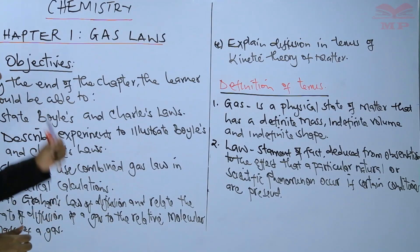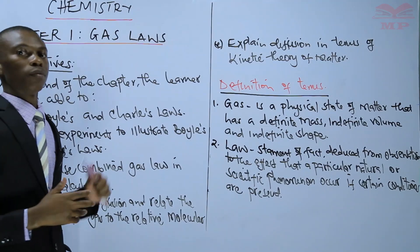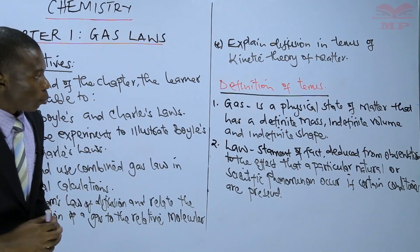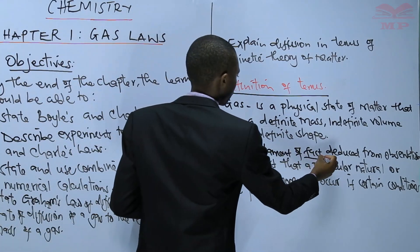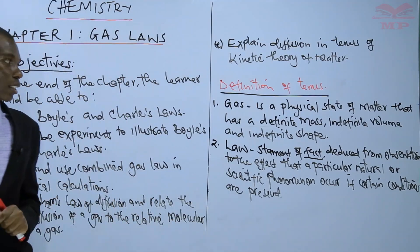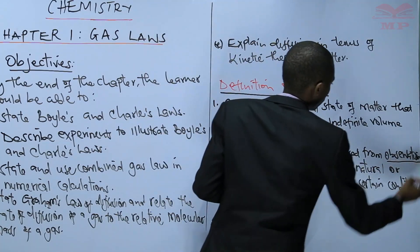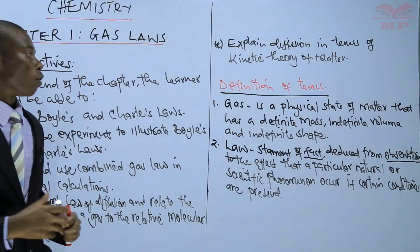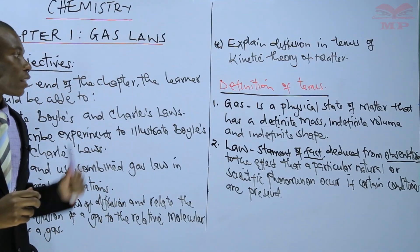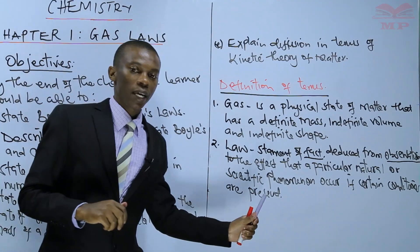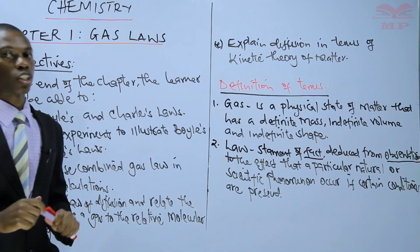To the effect that a particular natural or scientific phenomenon occurs if certain conditions are present. Therefore, it must be a fact, and this fact must come from observations — so you must have done experiments and observed that this is a fact. Again, there are certain conditions which must be present, which we are going to discuss later in this chapter.